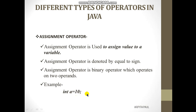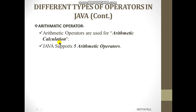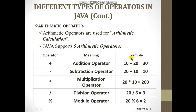Now coming to the next operator, that is the arithmetic operator. Arithmetic operators are used for arithmetic calculations only. Java supports five basic arithmetic operators. The plus sign is the addition operator, used to add two numbers. The minus sign is the subtraction operator, used to subtract two values. The asterisk is the multiplication operator, used to multiply two values. Next is the division operator, which returns the quotient of a division. The percentage sign is called the modulo operator, which returns the remainder of a calculation.